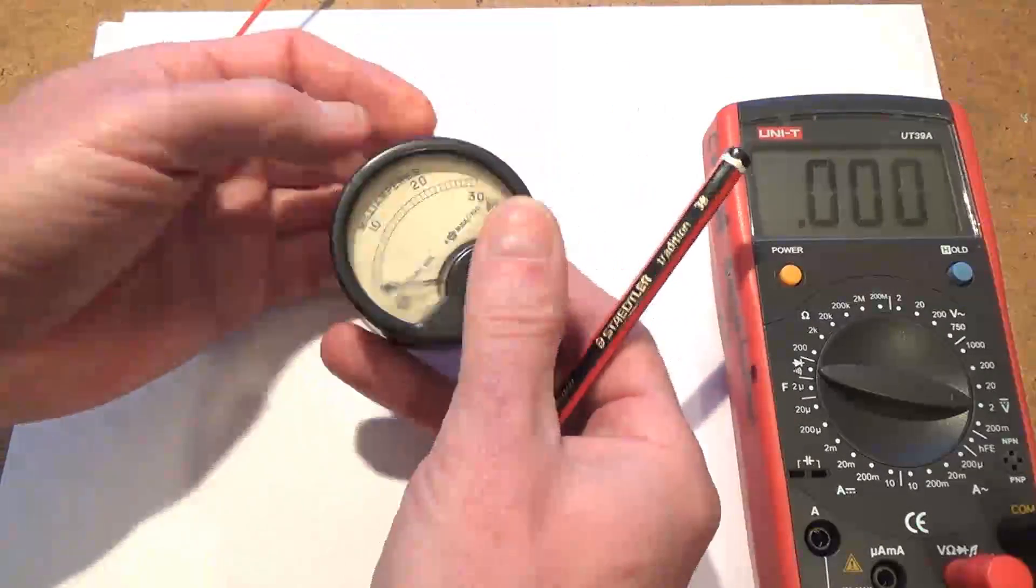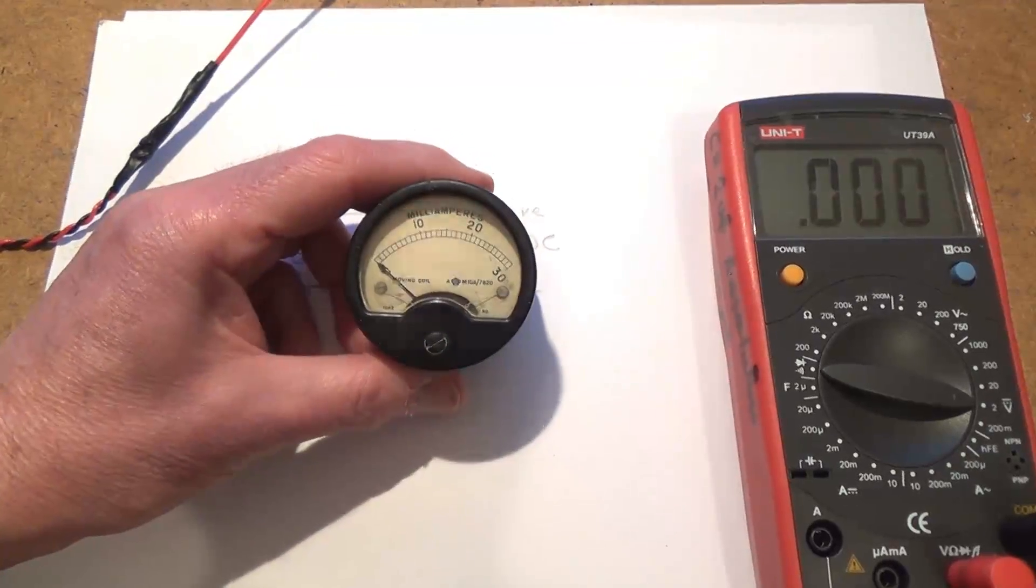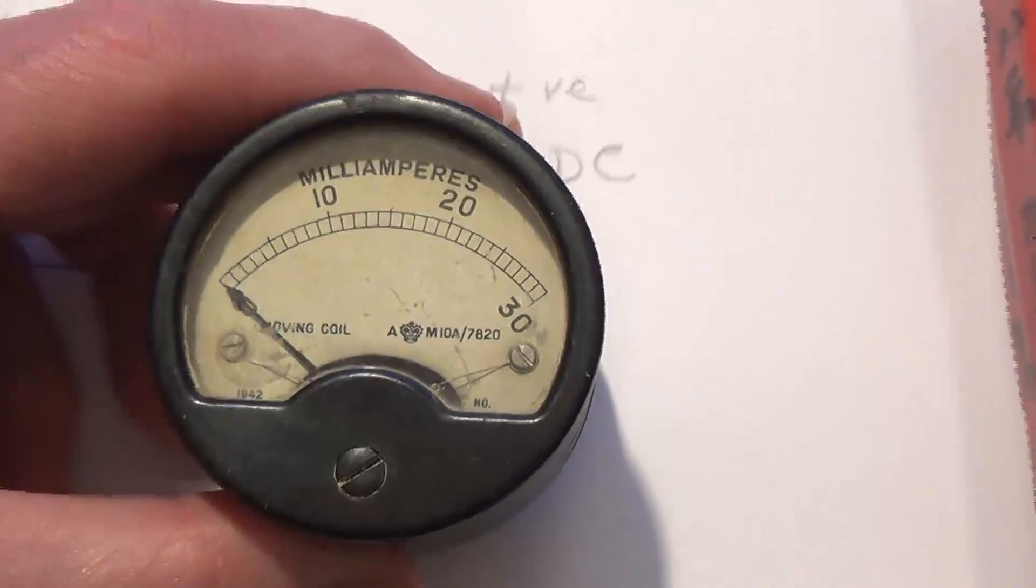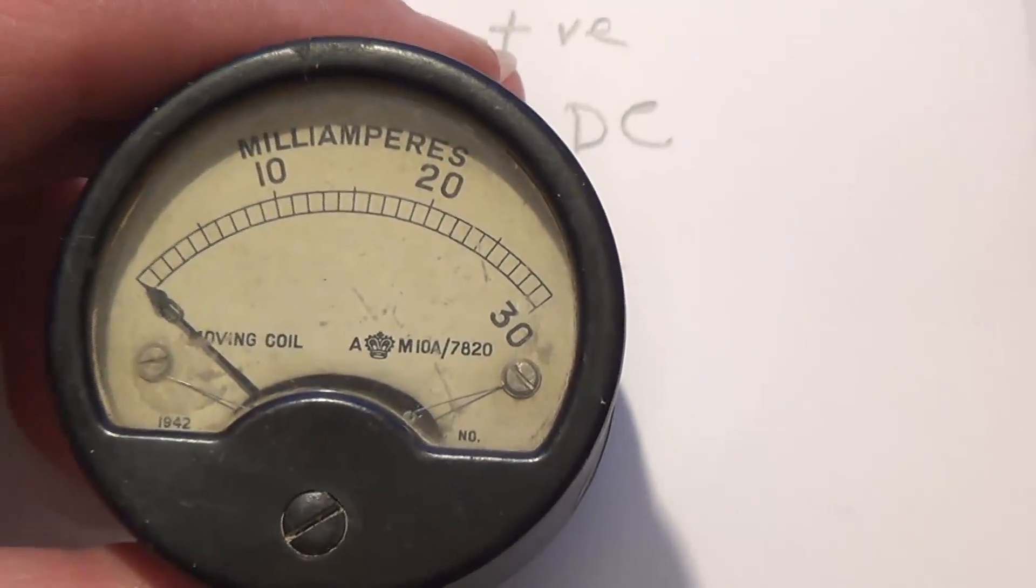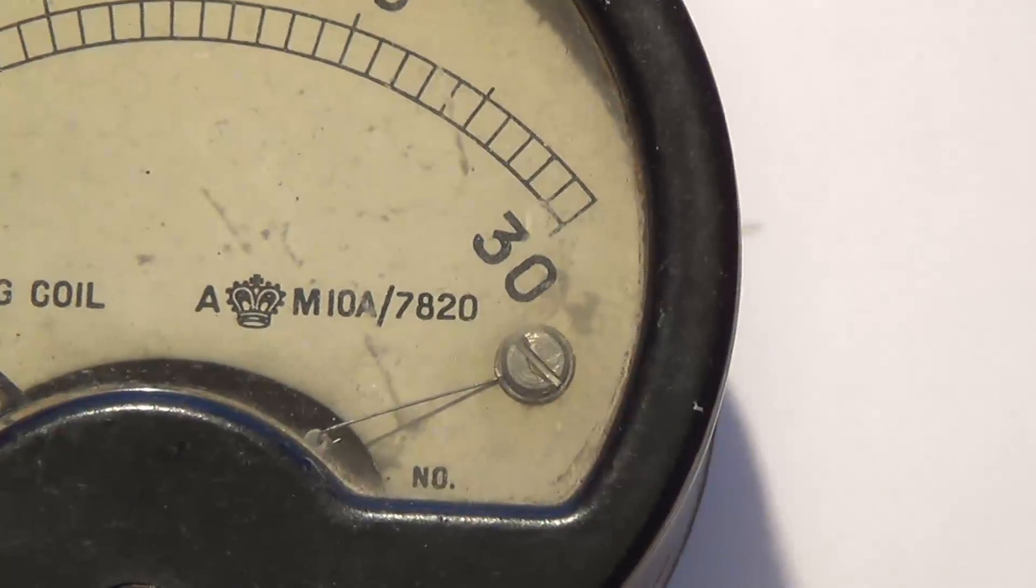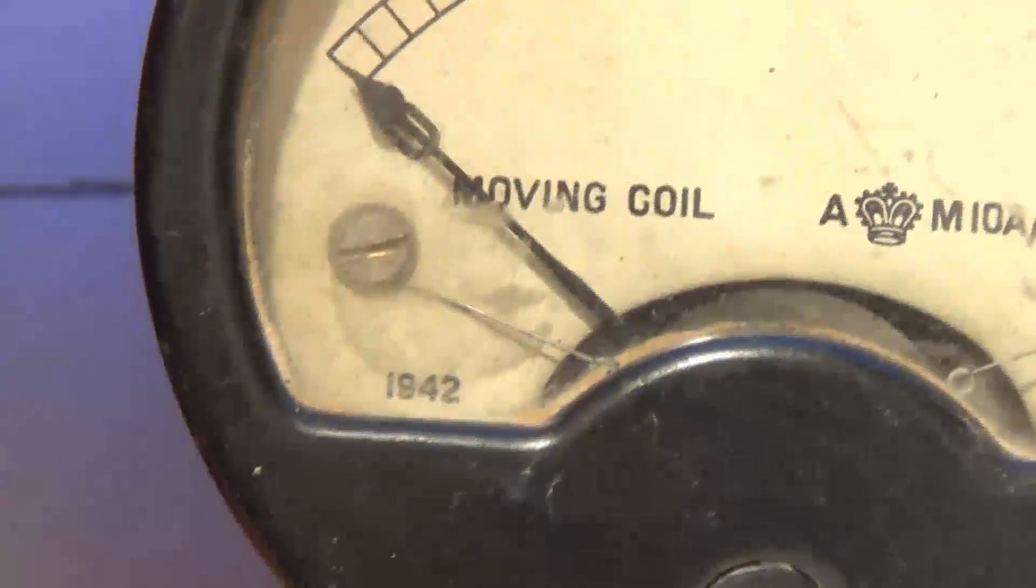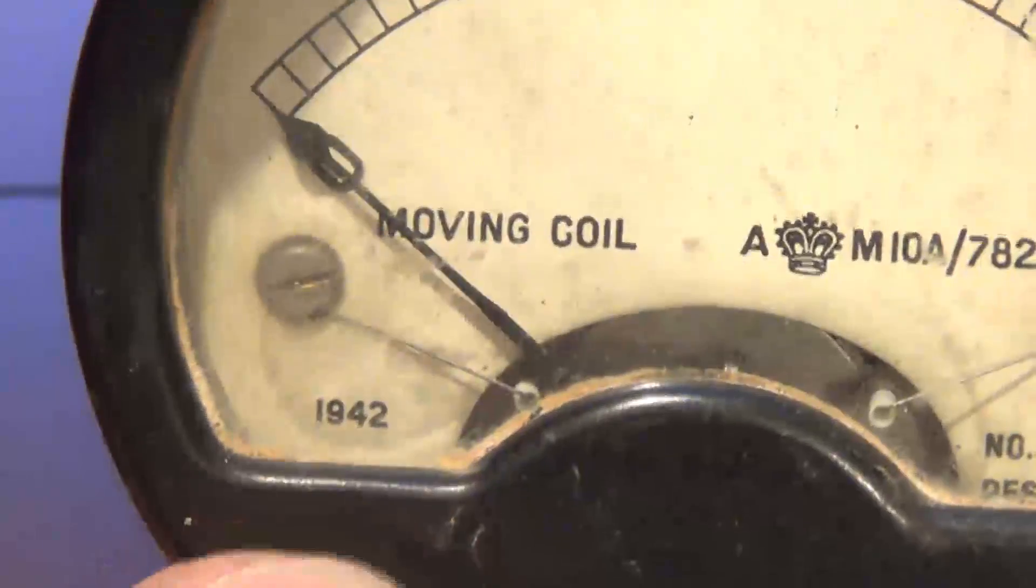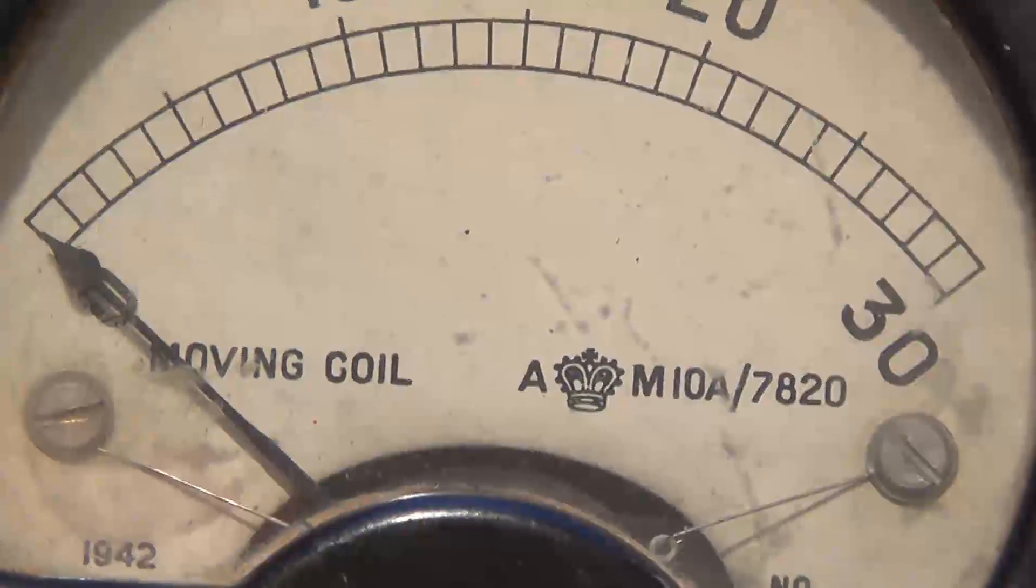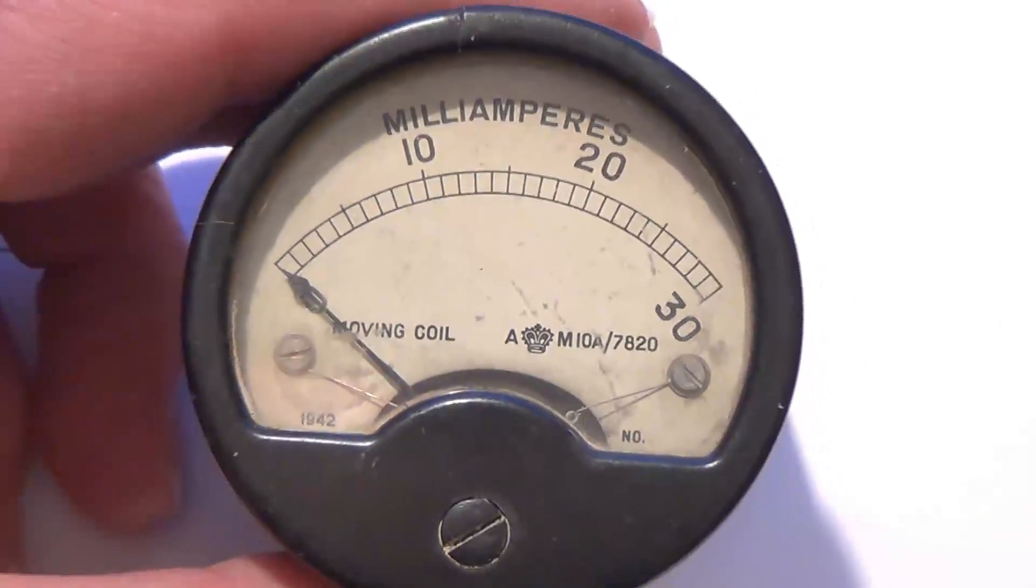When I was going through my meters, look at this one - this is a lovely meter, this is a 30 milliamp meter. You can see this one, the AM there tells you that it's Air Ministry. But look at the date there guys - 1942. Boy, if only this meter could talk. I wonder what bit of equipment that came out of and what sort of stories that could tell.